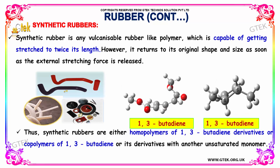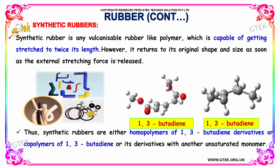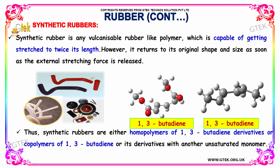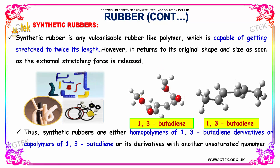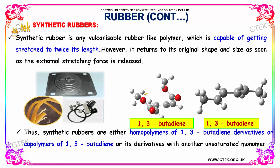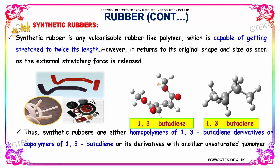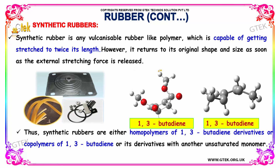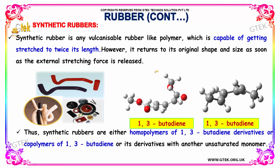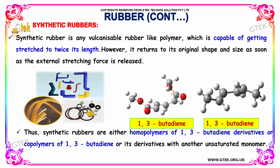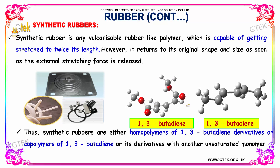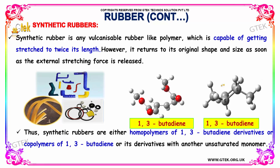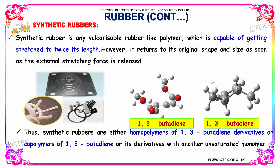Synthetic rubber is any vulcanizable, rubber-like polymer which is capable of getting stretched to twice its actual length. However, it returns to its original shape and size as soon as the external stretching force is released. Synthetic rubbers are either homopolymers of 1,3-butadiene or copolymers of 1,3-butadiene or its derivatives with another unsaturated monomer.